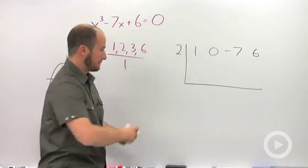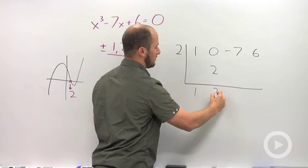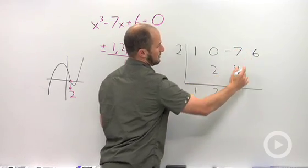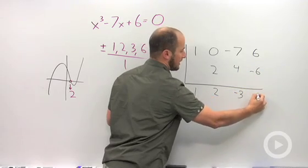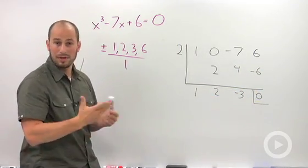Then do synthetic division. Drop our 1 down, multiply and add. 2, 4, negative 3, negative 6 and 0. So 2 actually did work. That's really cool.